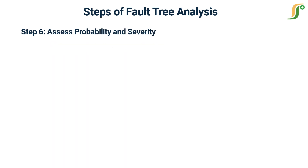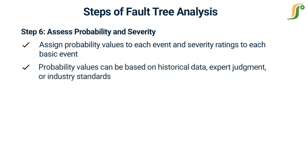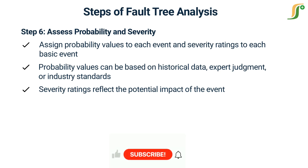In step 6, assess probability and severity. Assign probability values to each event and severity ratings to each basic event. This assessment helps prioritize causes that require immediate attention. Probability values can be based on historical data, expert judgment, or industry standards, while severity ratings reflect the potential impact of the event.